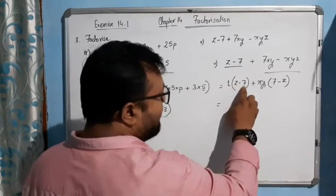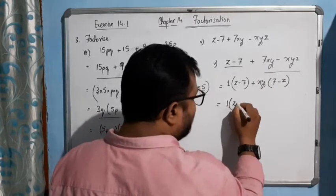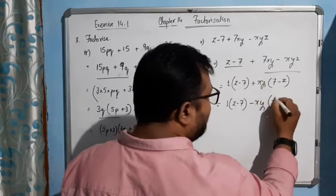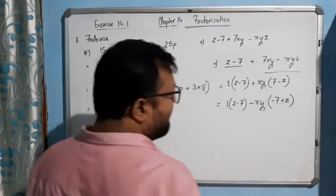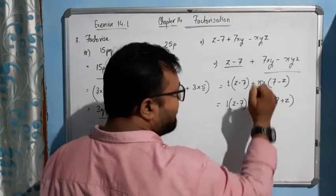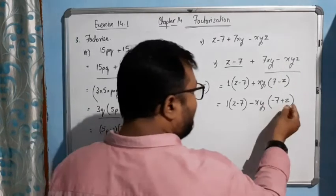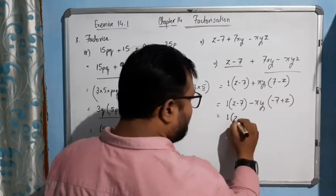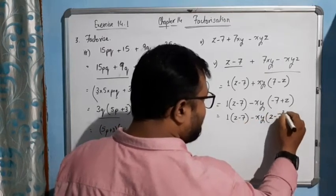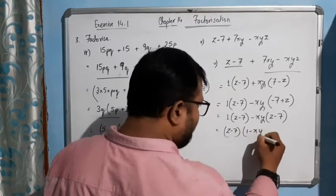So what we will do — we need to interchange this one. How we can change it: from 1 times (Z minus 7), if we take minus common for the XY part, it becomes minus XY times (negative 7 plus Z). See if we multiply: minus times minus gives plus, so 7XY; minus times plus gives minus, so minus XYZ. Is that clear? Now if we interchange, we get 1 times (Z minus 7) and minus XY times (Z minus 7). Now Z minus 7 is common, so we take it out and (1 minus XY) will be the answer.